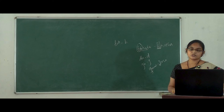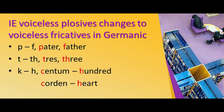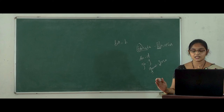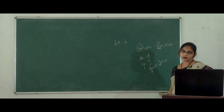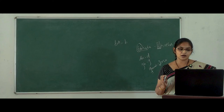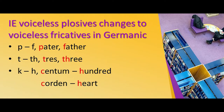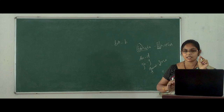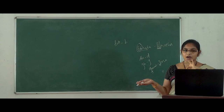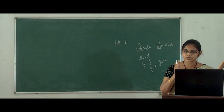Coming to the third set of change: voiceless plosives in Indo-European transferred to Germanic as voiceless fricatives. The 'p' sound changes into 'f', the 't' changes into 'th', and the 'k' sound changes into 'h'. For example, the Latin word 'pater' contains the 'p' sound; when it changed into Germanic language it becomes 'father' — so voiceless plosive 'p' changes into voiceless fricative 'f'.